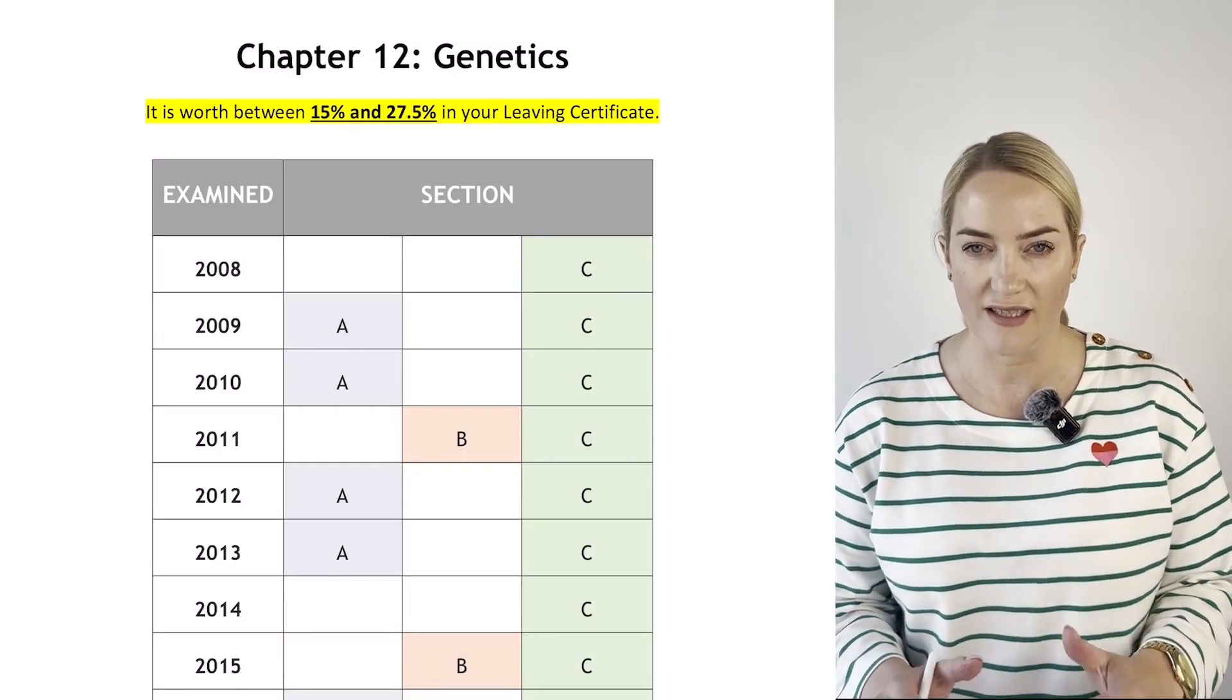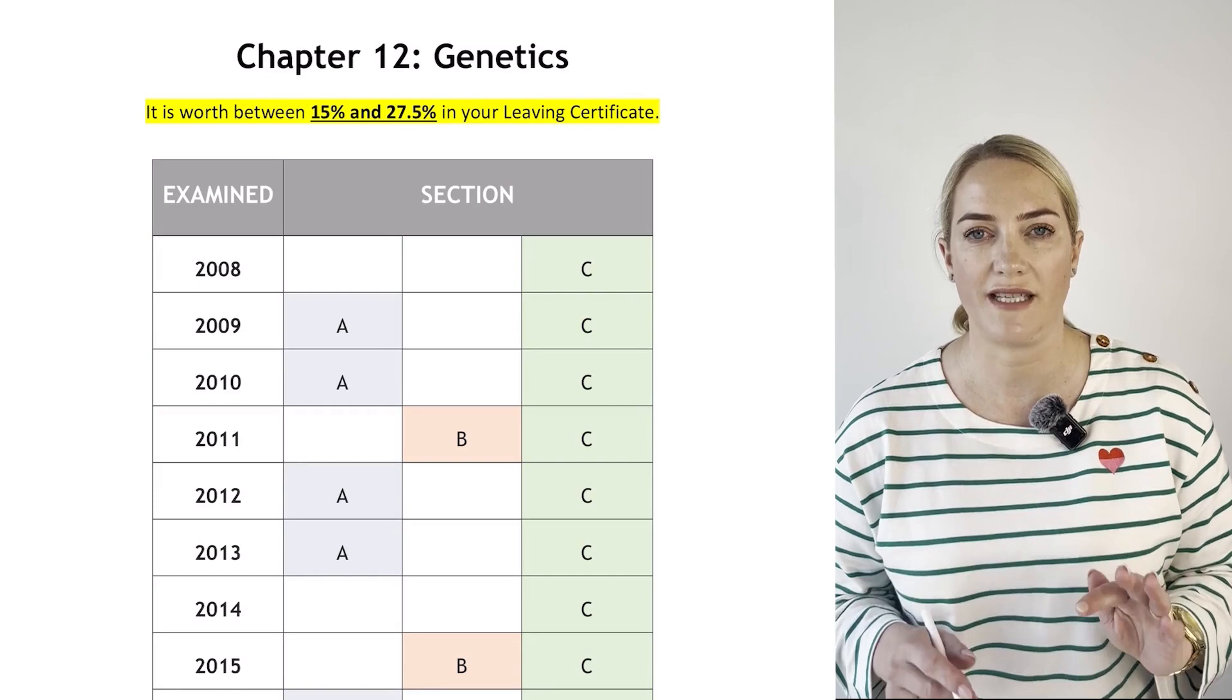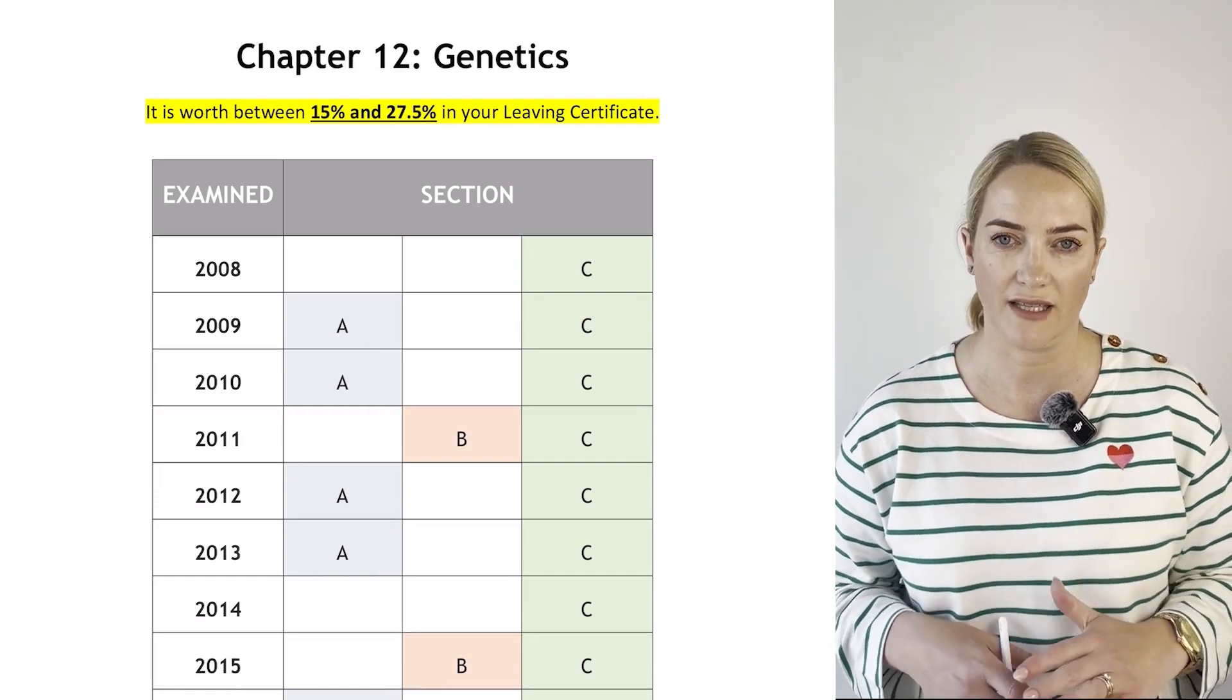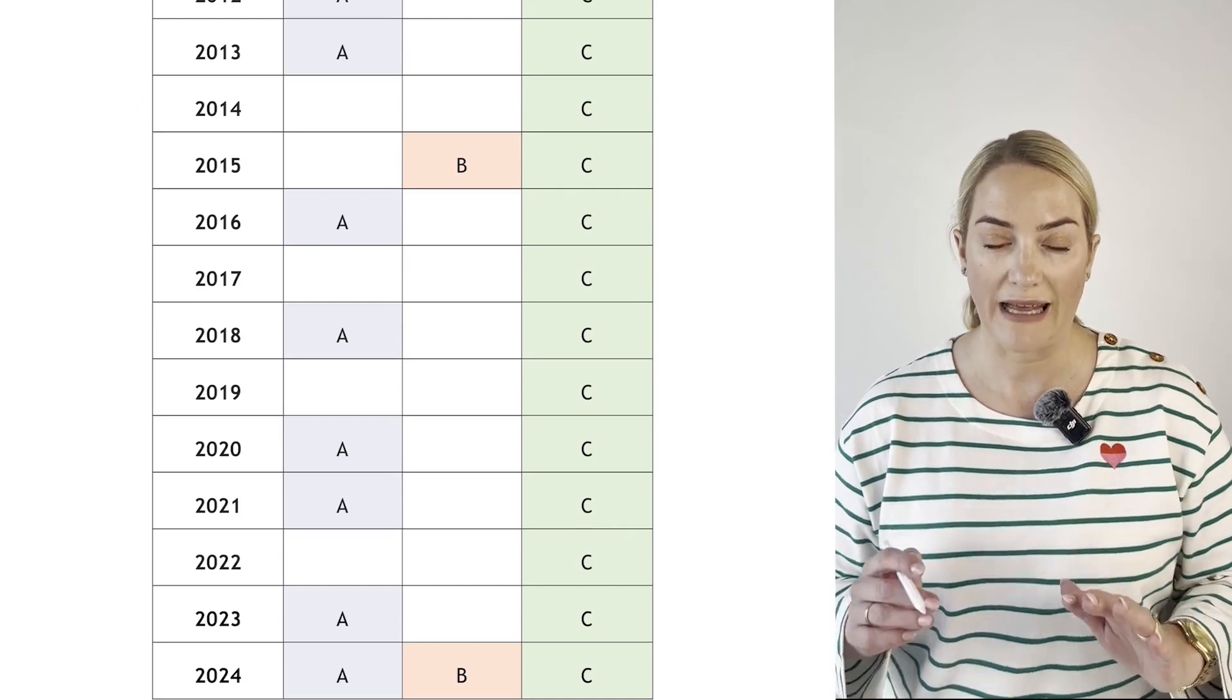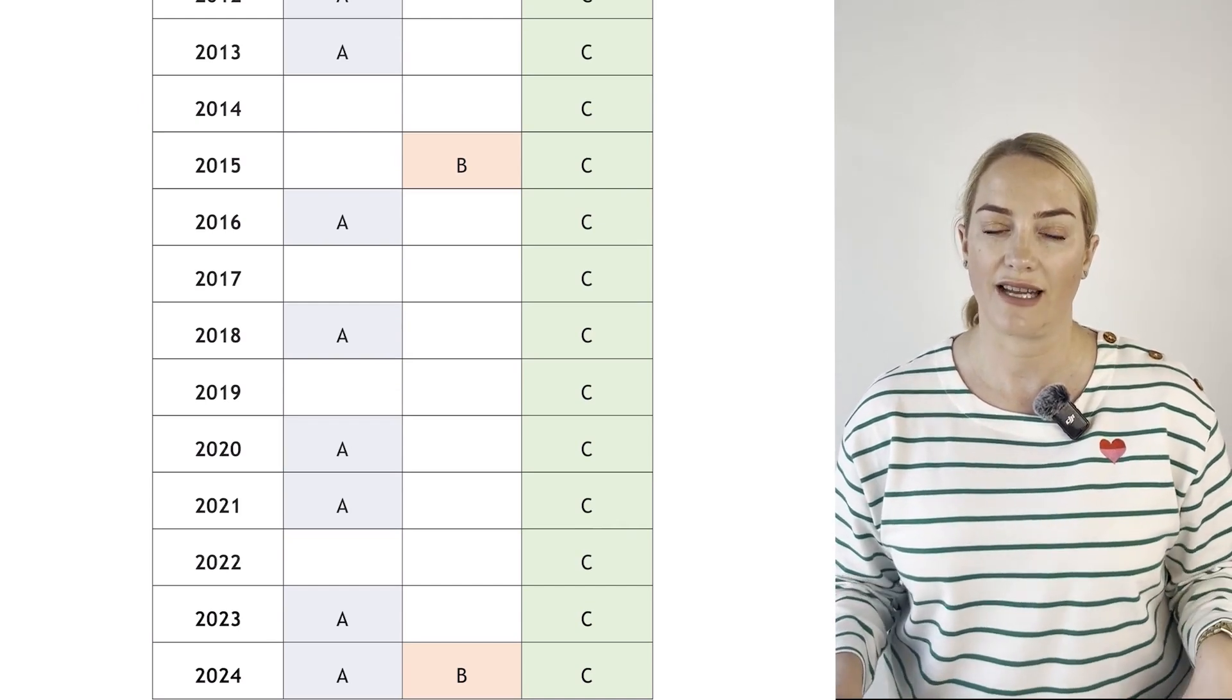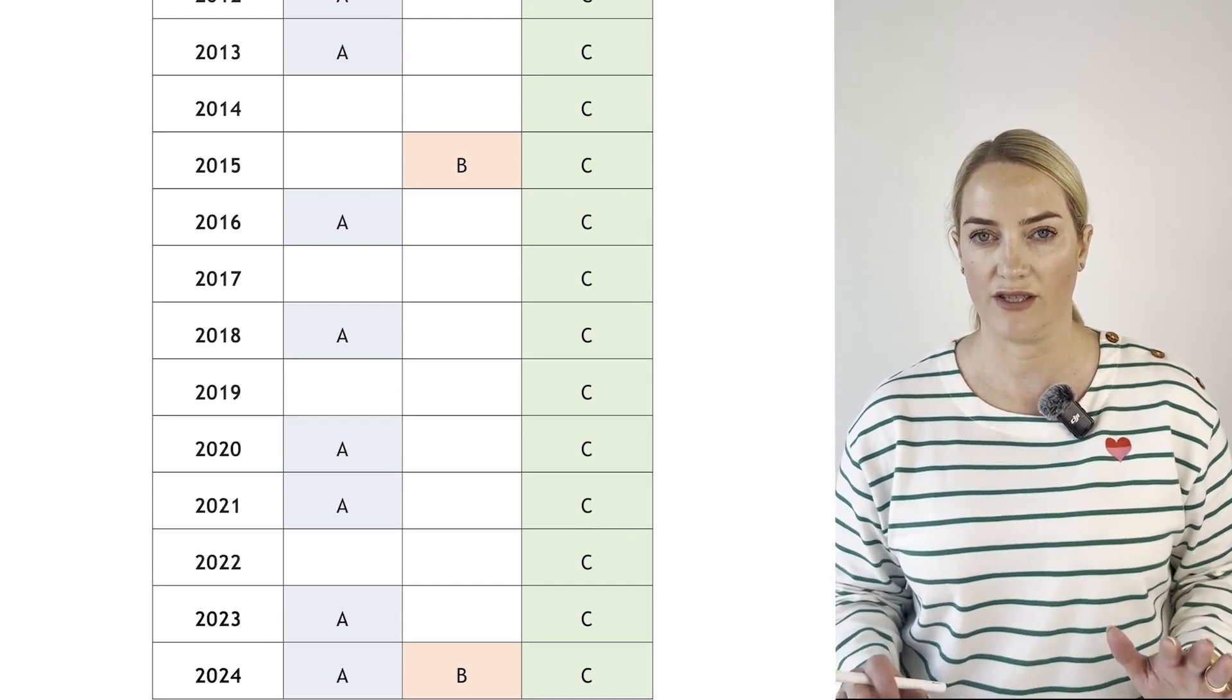Genetics - you can see genetics is worth between 15 and 27.5% of your paper. Genetics comes up every single year in section C as a 60-mark question - that's your 15%.